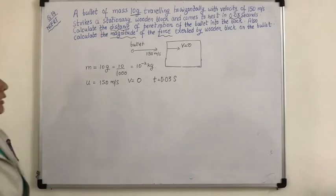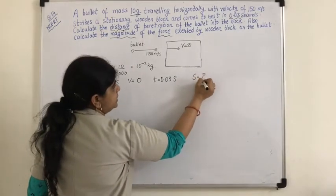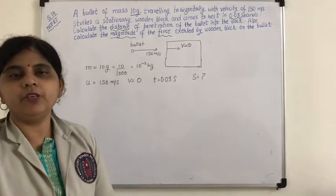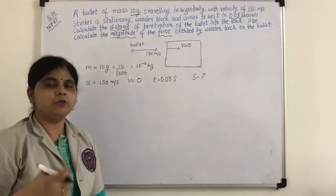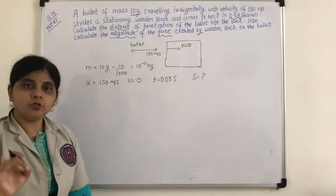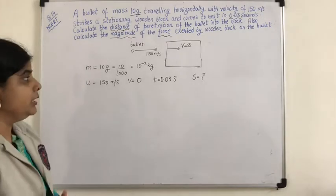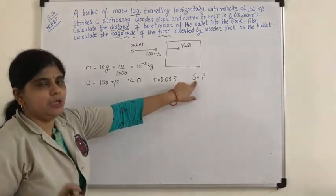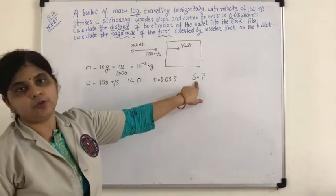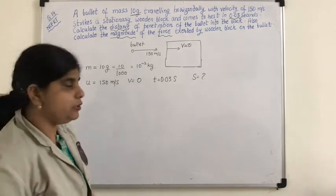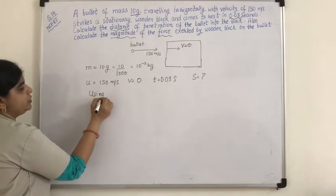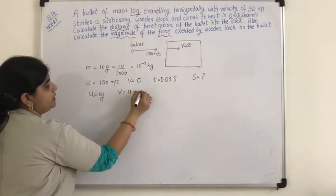What we need to calculate is distance. We have three equations of motion: V equals U plus AT; S equals UT plus half AT squared; and V squared minus U squared equals 2AS. We have to choose the suitable equation. We need to find the value of S, so for that I need to find the acceleration of the bullet. I can use the first equation of motion: V equals U plus AT.